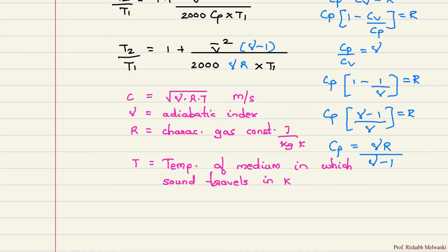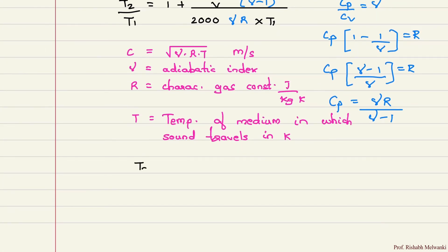Then T is temperature of medium in which sound travels in Kelvin. Now here you can observe we have gamma R T, but this R is in kilojoules per kilogram Kelvin and this R is in joules per kilogram Kelvin. So we will take this 1000 over here. So I will write down the equation: T2 by T1 is equal to 1 plus velocity squared gamma minus 1 upon 2 into gamma into R into 1000 into T1.